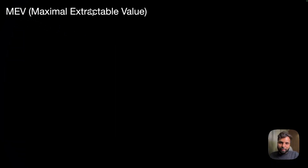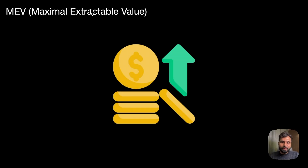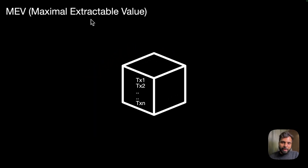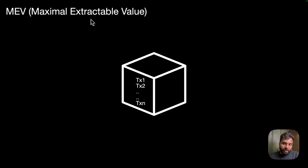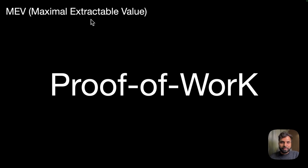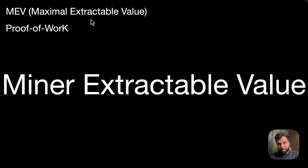MEV, which is short for Maximal Extractable Value, refers to the extra value that can be squeezed out of arranging block transactions in a certain way. In simple terms, MEV is the extra value that can be extracted apart from the standard block rewards or gas fees by miners, validators, or even some clever bot operators by including, excluding, or rearranging transactions. The term MEV came into place during the Ethereum proof-of-work era when it was called miner extractable value, because during that time miners could rearrange the transactions. But now even validators or some bot operators can do that.